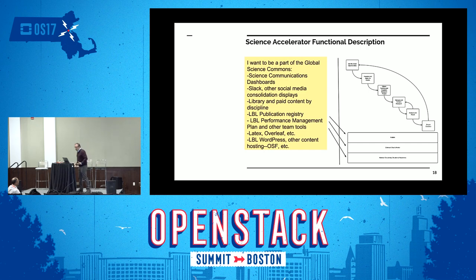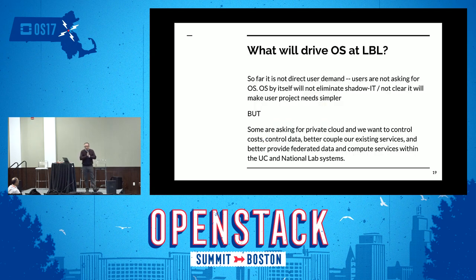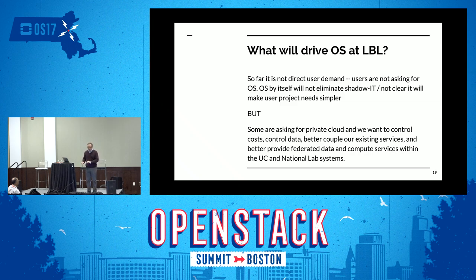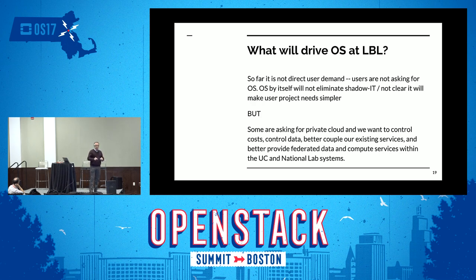Science communications, library research, publishing, putting up websites — we run all of these capabilities now, but they're not fit into any framework someone can quickly find. In our case, what is going to drive OpenStack at Lawrence Berkeley National Laboratory is actually not direct user demand. The scientists are not interested in making the infrastructure better — we are interested in helping them do science more effectively. So it's going to be a process of experimentation where we're providing things, in many cases for free, and seeing if they demonstrate productivity gains.